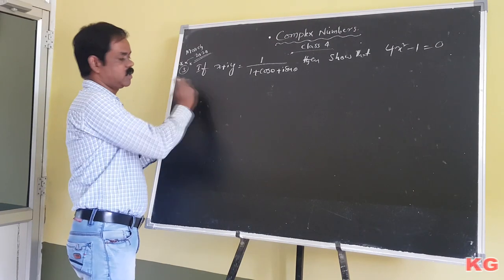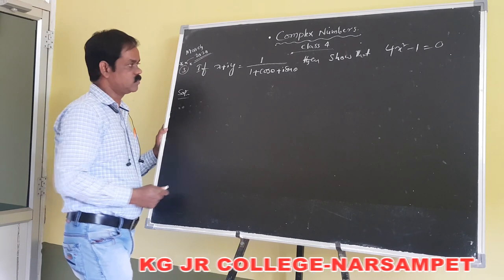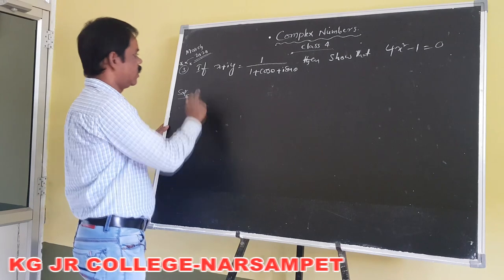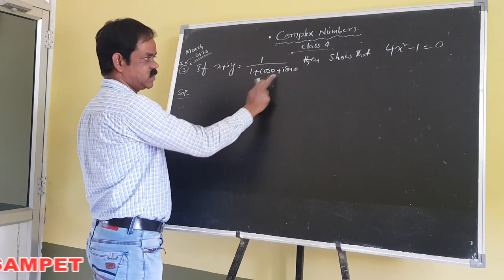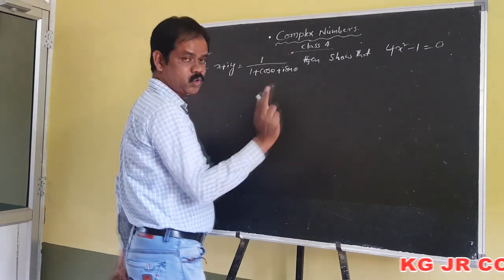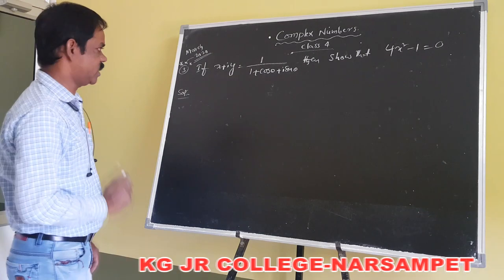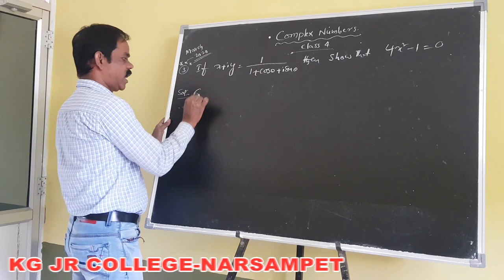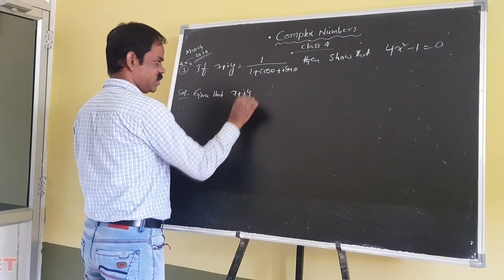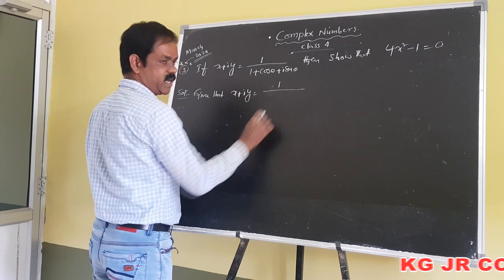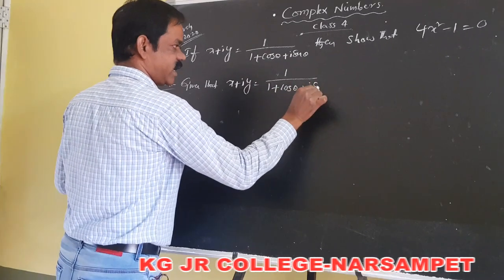The third problem is very important — it was given in March 2020 for 4 marks. If x plus iy equals 1 divided by (1 plus cos theta plus i sin theta), then show that 4x squared minus 1 equals 0. According to the problem, given that x plus iy equals 1 divided by (1 plus cos theta plus i sin theta), where 1 plus cos theta is the real part and sin theta is the imaginary part.